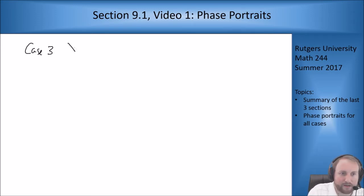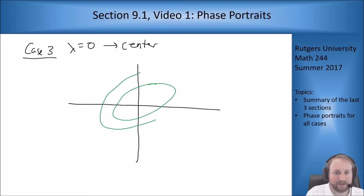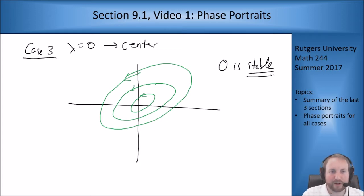The third case is lambda equals zero. This is our center. This is the strange one where solutions don't really move at all. I get ellipses. They could be slanted, they could be centered. They're going to be centered, but they could be slanted or normal. Here zero is stable. Here I mean stable and not asymptotically stable because things aren't going in towards zero. Things that are near zero just stay nearby. They don't run away, but they also don't get closer. So this is a stable equilibrium point, not an asymptotically stable one. There's the reason why I've been emphasizing asymptotically stable so much.